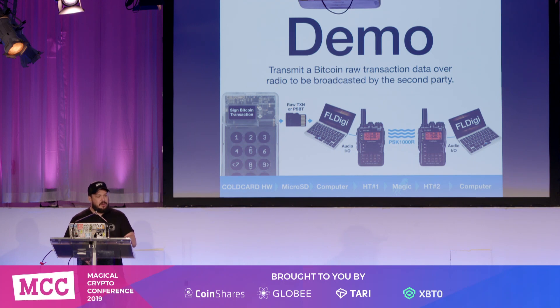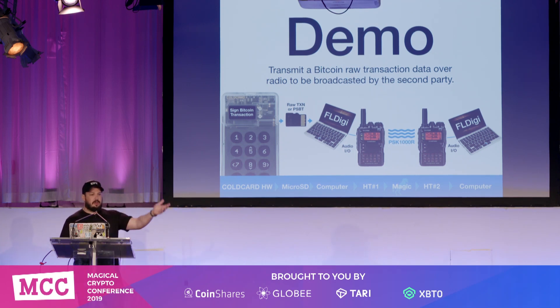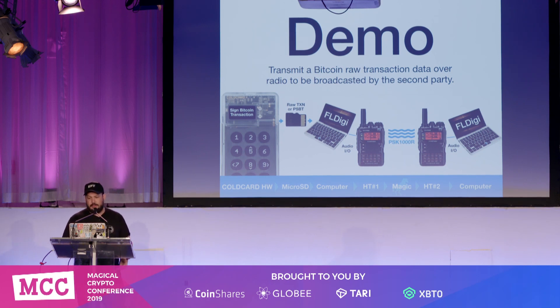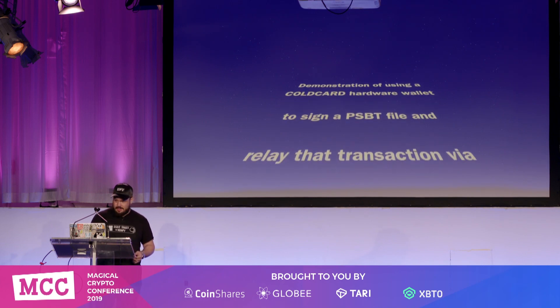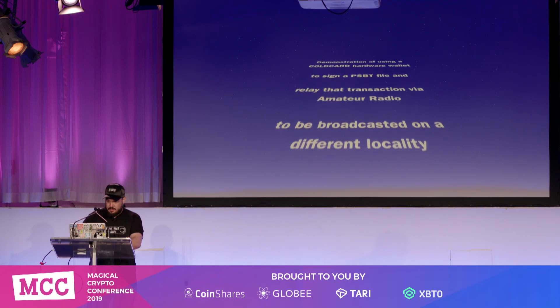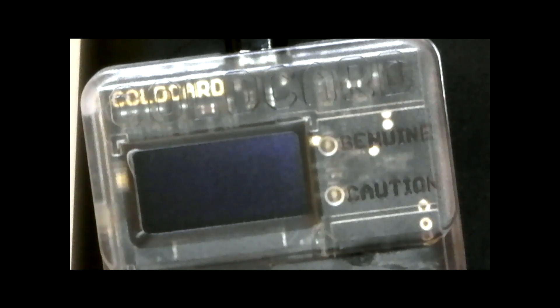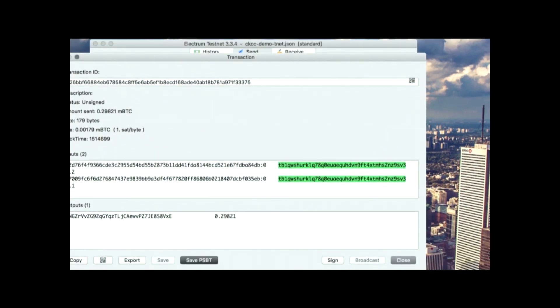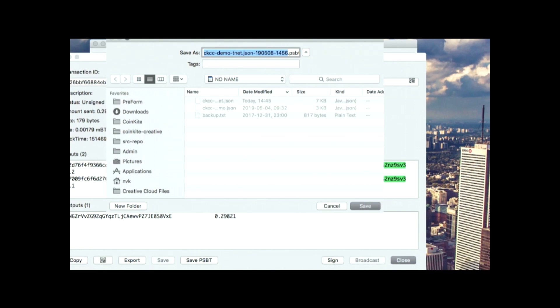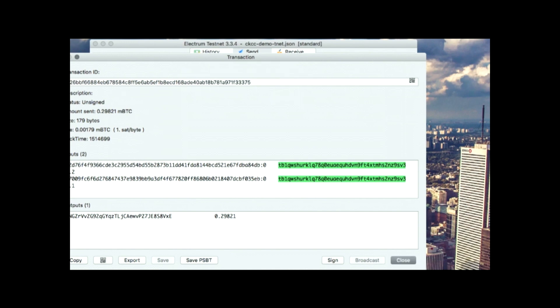The demo I'm going to show is: you get the transaction signed, you use a laptop with a radio, and you transmit that to the other party who demodulates it and rebroadcasts it for you. So now we'll be creating the PSBT file from Electrum. We have some testnet here. Let me send the bitcoins back to the testnet faucet where we got it from — just press preview, then save as PSBT. We're going to save it to the MicroSD card. It is saved.